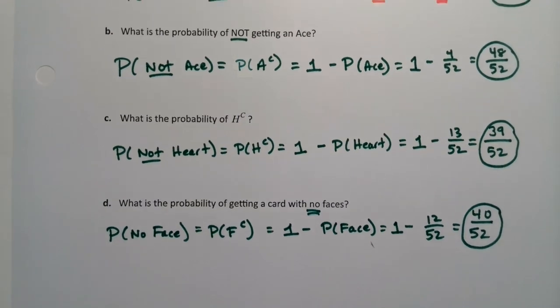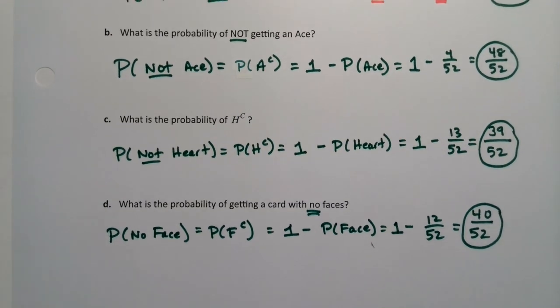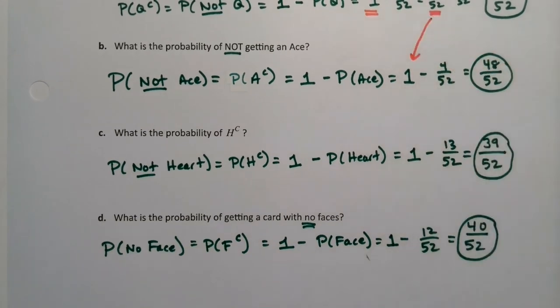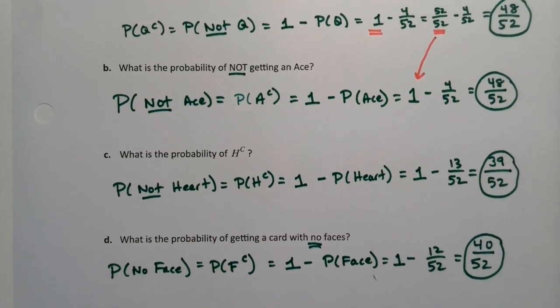So you can see the complement rule doesn't actually start out that difficult. The one tricky part is the math portion here, to kind of imagine that one is 52 out of 52 in your mind. And that's true for any particular problem. This one's just always 52 because it's a deck of cards. Every problem will work similarly to this.